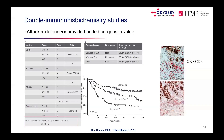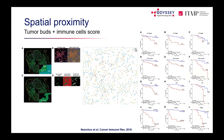Using immunofluorescence and spatial proximity analysis, Peter Kai's work quantified proximity of each tumour bud to the nearest CD8 and CD3 T cells. Across training, testing, and validation datasets, combining tumour budding with immune cell proximity produced dramatically better patient stratification than either T-stage, budding alone, or immune cells alone.